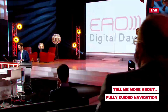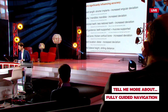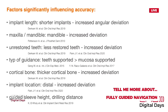There are some factors that significantly influence accuracy. First of all is implant length — the shorter the implants, the more increased the angular deviation. If you're placing implants in the maxilla, you have less deviation compared to the mandible. If you have unrestored teeth, the more unrestored teeth you have, the less accurate the guidance. And the type of guidance — whether it's teeth-supported or mucosa-supported — is the next important factor.